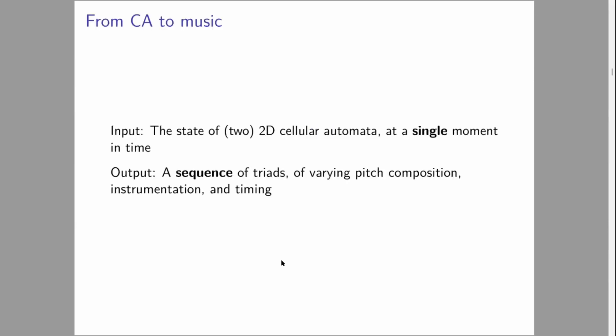This brings us to CAMU, Cellular Automaton Music. The input is going to be the state of two 2D Cellular Automata at a single moment in time. The output from that input is going to be a sequence of triads of varying pitch composition, instrumentation, and timing. Once we've generated that sequence, we're going to advance both automata by one step and do this again, get another sequence of triads. We continue this until we have enough triads.